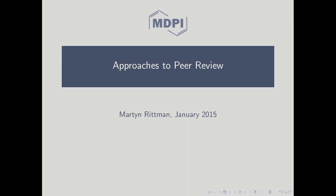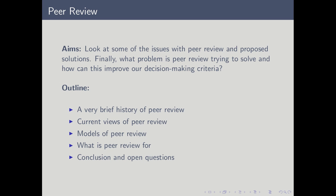My name is Martin Rickman and I'm going to introduce a presentation entitled Approaches to Peer Review. The aim is to look at some of the issues associated with peer review and some of the current topics that various publishers are trying to solve. We'll start with a brief history, then look at some current views about peer review, a few models of how peer review is done, and finally ask what we're trying to achieve with peer review, with a few conclusions and questions to end.